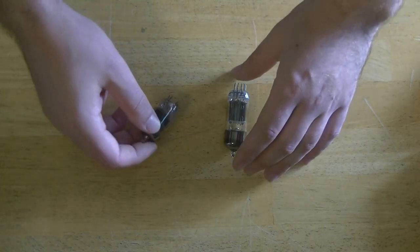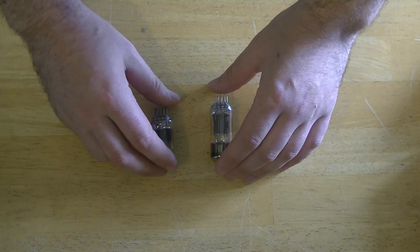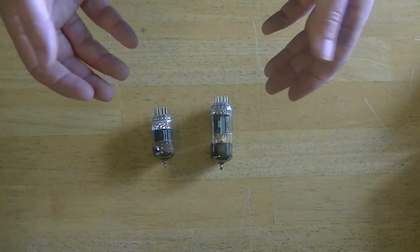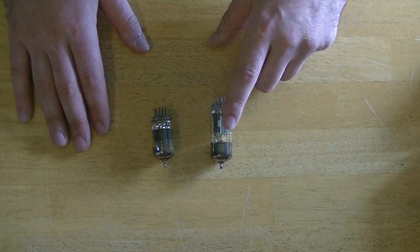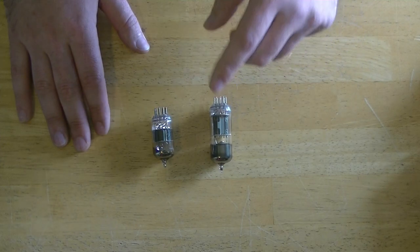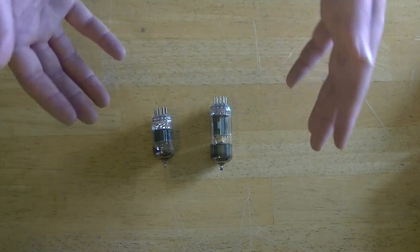It's being driven by a 6N1P output dual triode. And there are actually a bunch of different tubes that could be put in place of this, such as the 6922, the ECC88, and some other similar types.